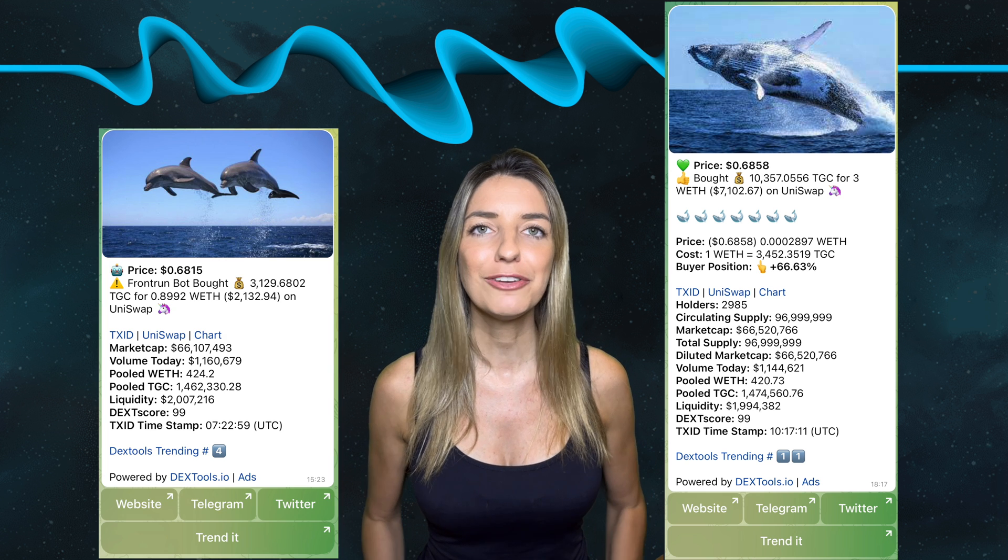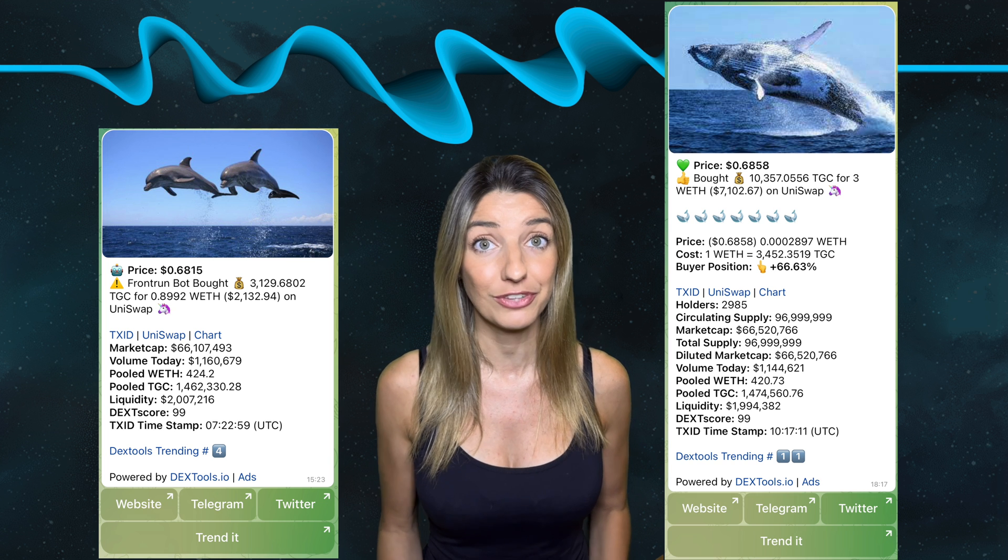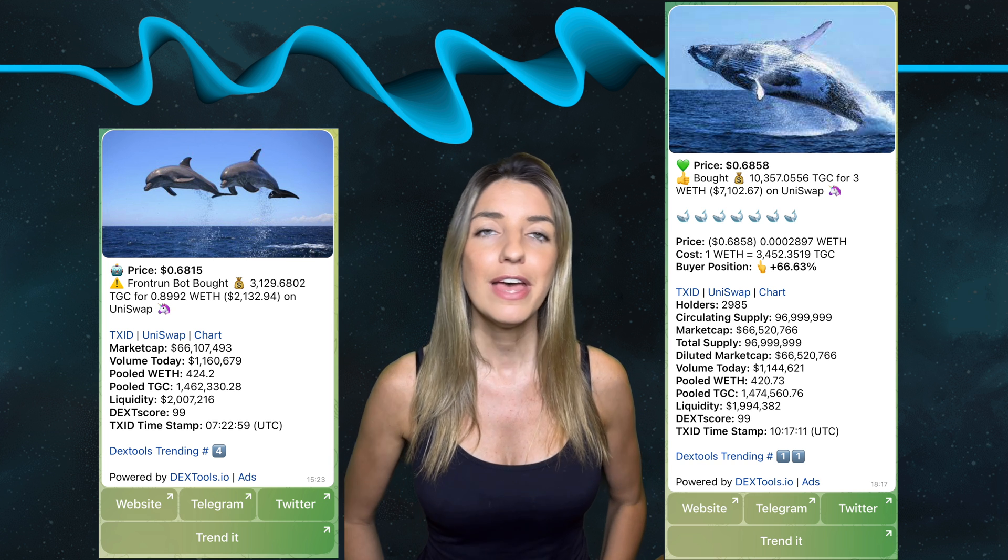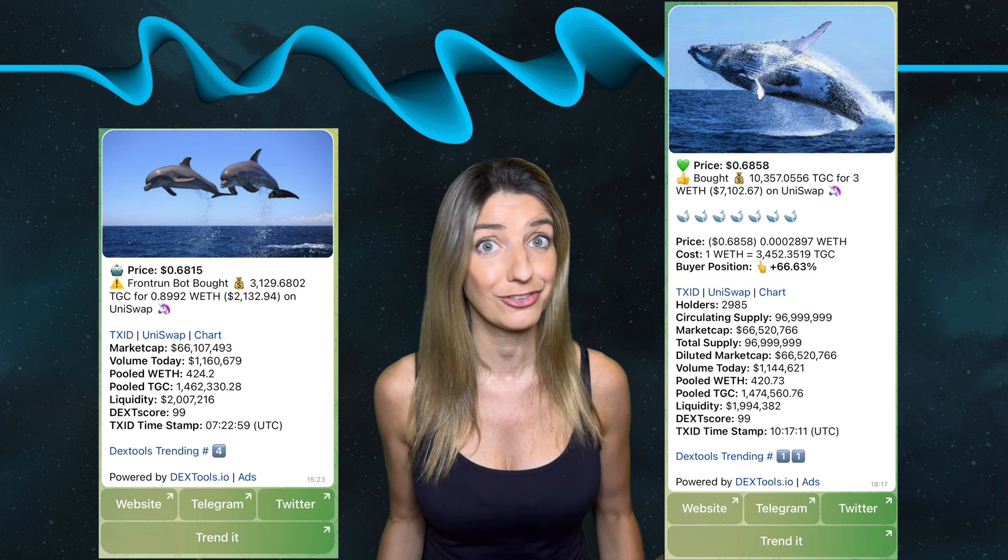In the full mode you can see all info about the token pair that you usually see on Dextools in the pair info section, for example the holders, the market cap, the fully diluted value, the liquidity, or the Dext score.